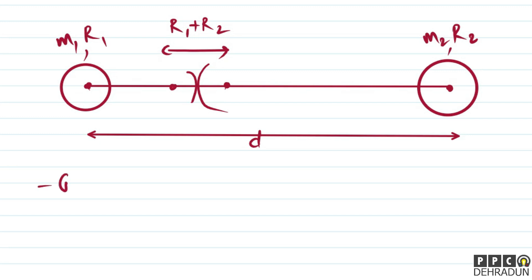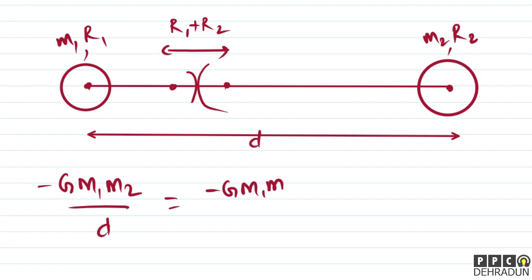The initial potential energy is −Gm1m2/d, since the separation between centers is d. This equals the final potential energy plus kinetic energies. The final potential energy is −Gm1m2/(r1+r2), since that is the separation when they collide. We also need to write the kinetic energy of m1 and m2.